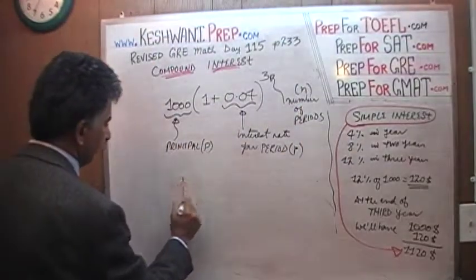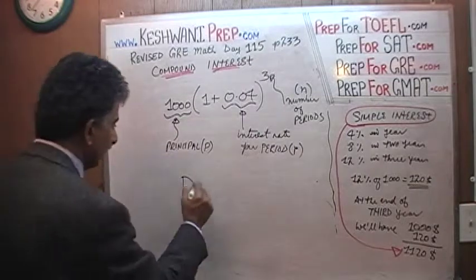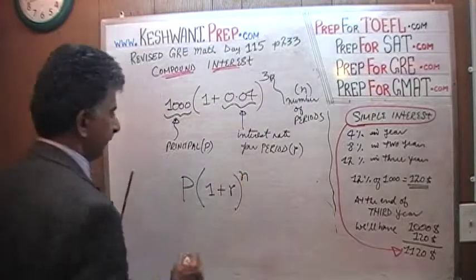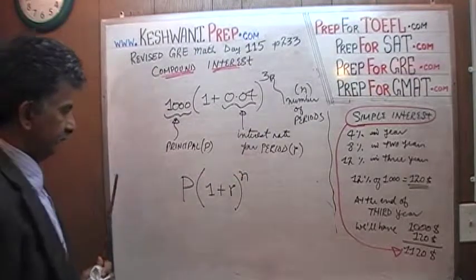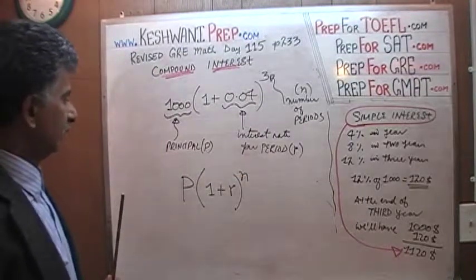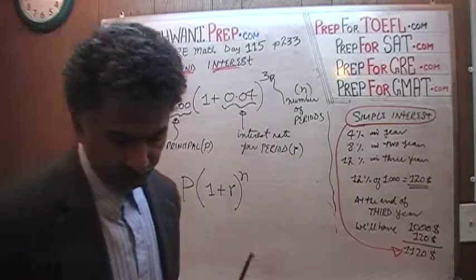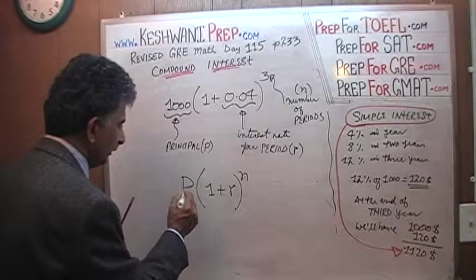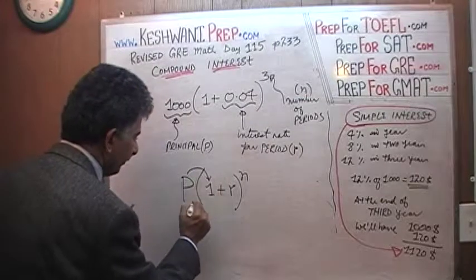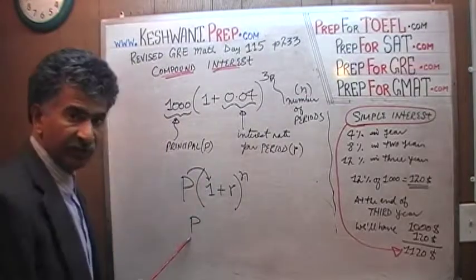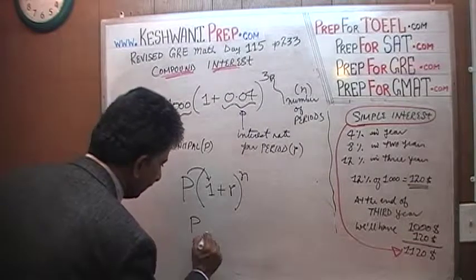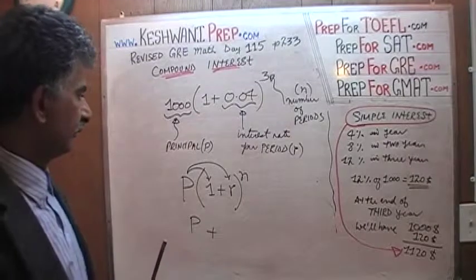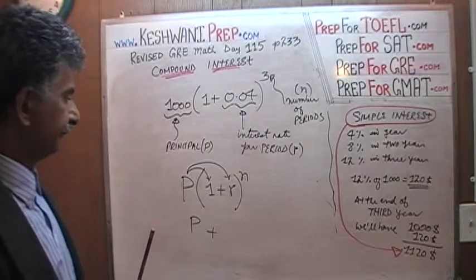So what it boils down to is the amount of principal that you are investing times 1 plus the interest rate raised to N. That's it. That's the amount that we are going to end up at the end of the period. This 1 times P is our principal that you invested, the amount that we started out with. Plus the P times this part is the interest rate. That's all.